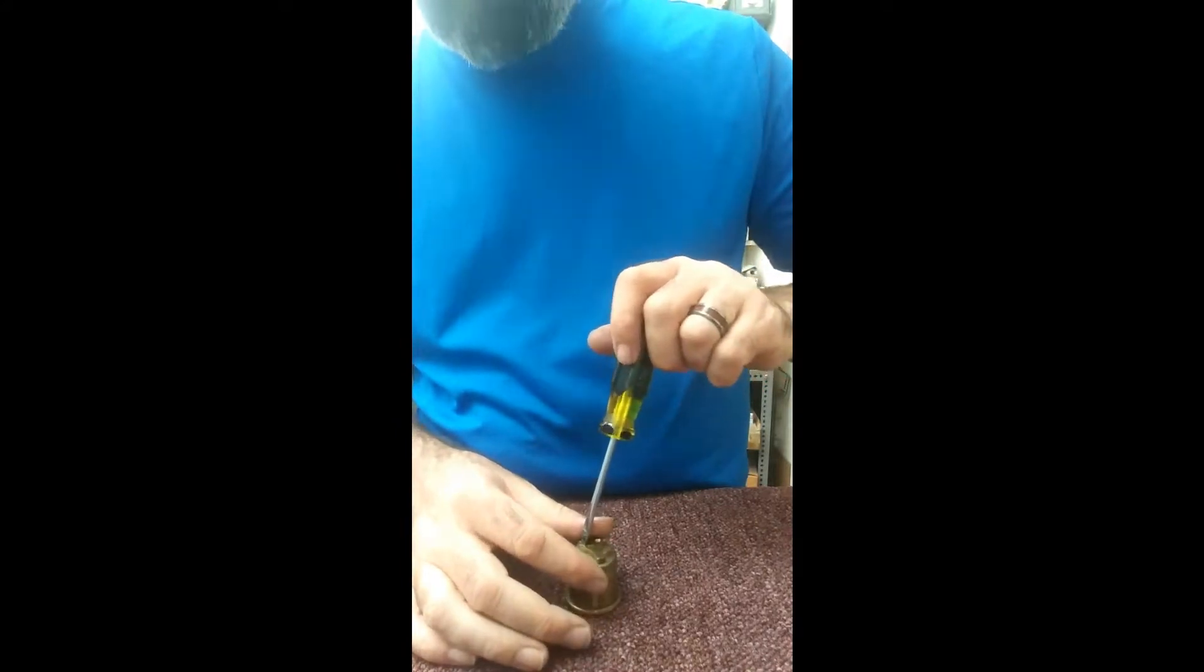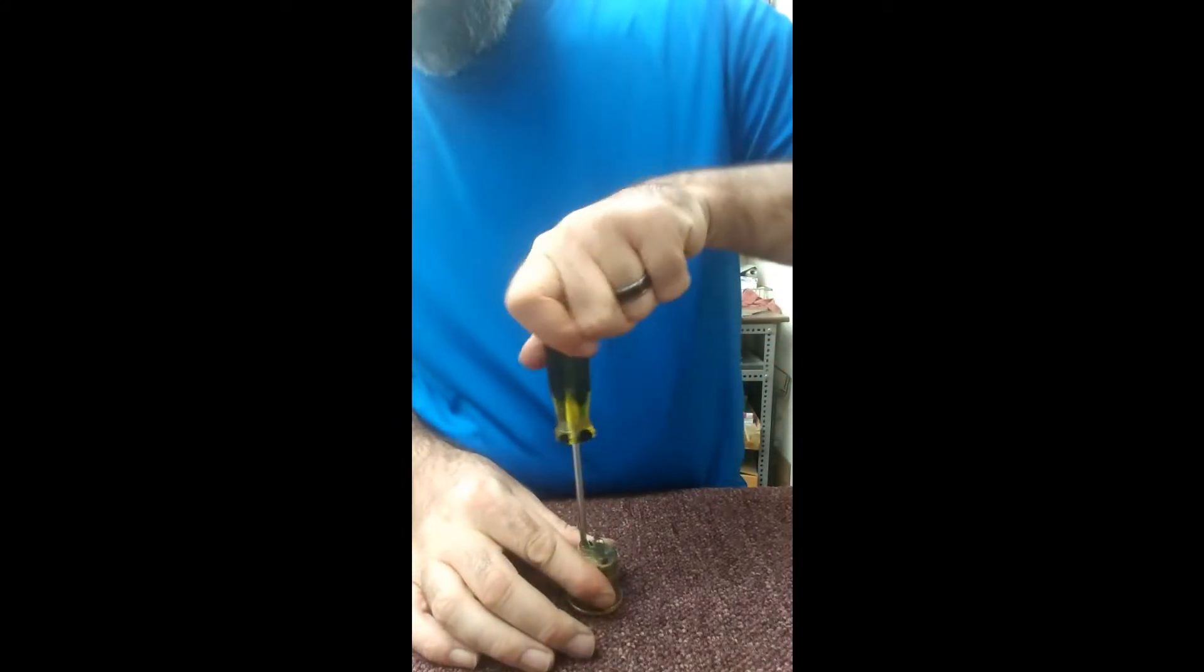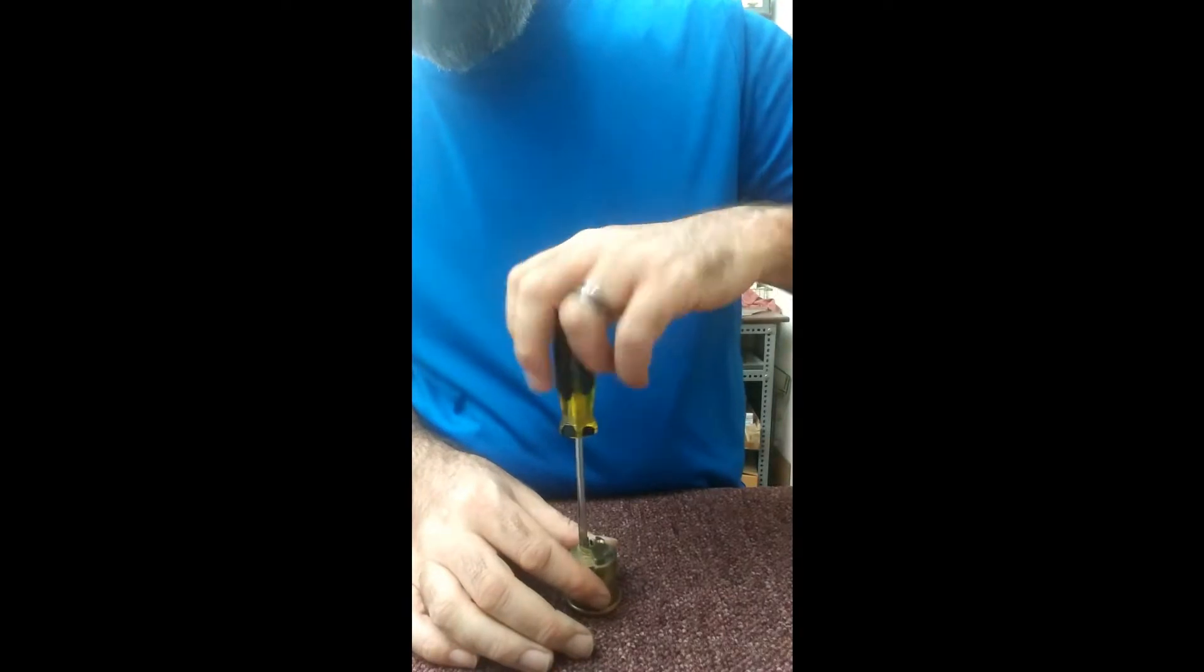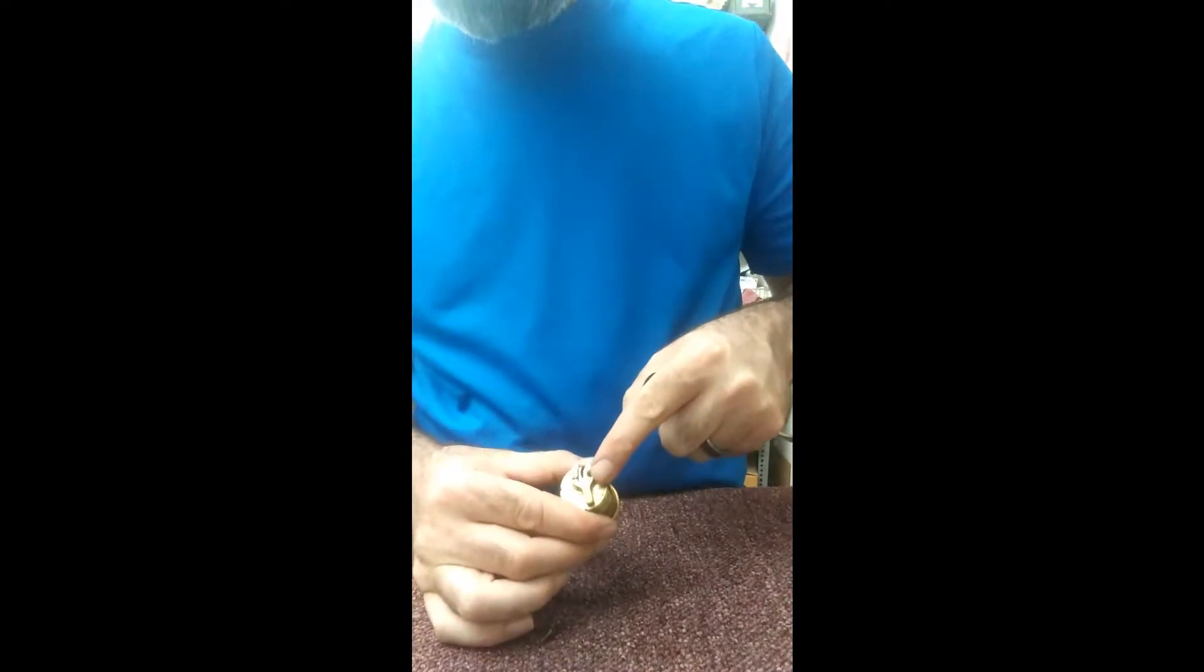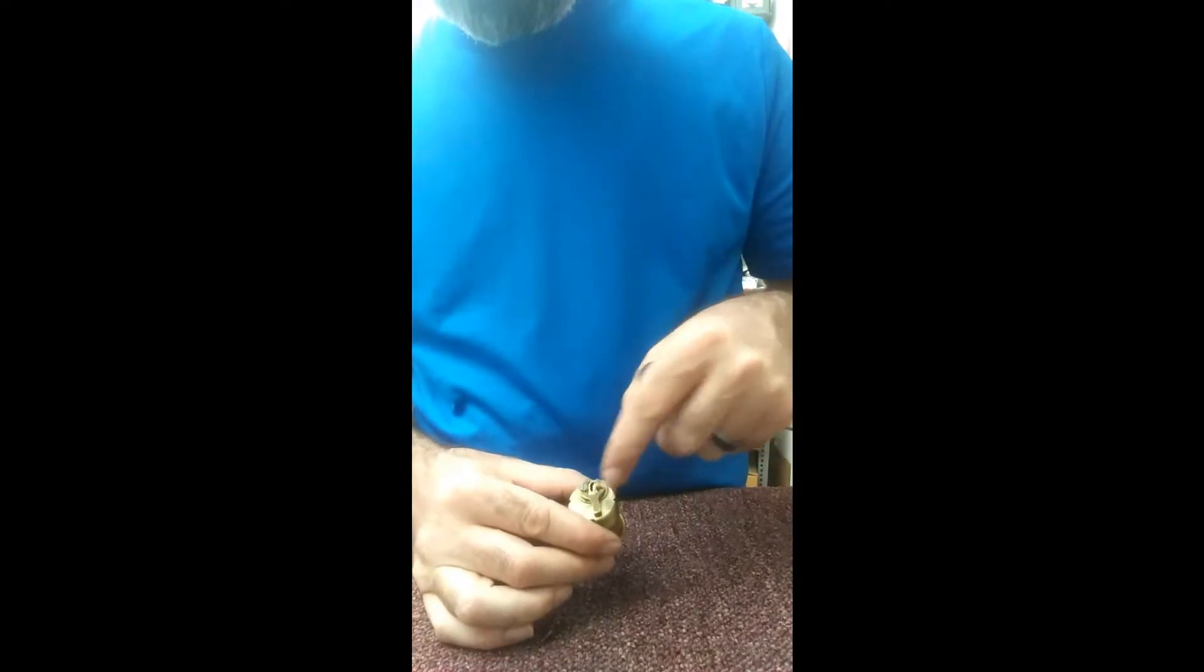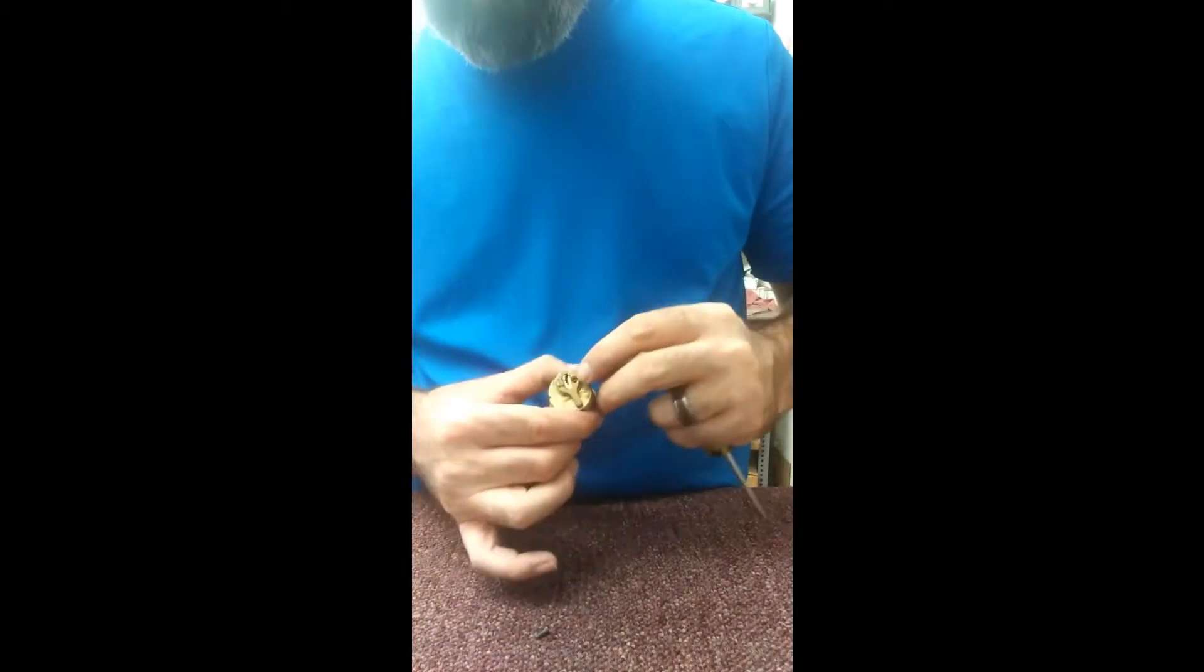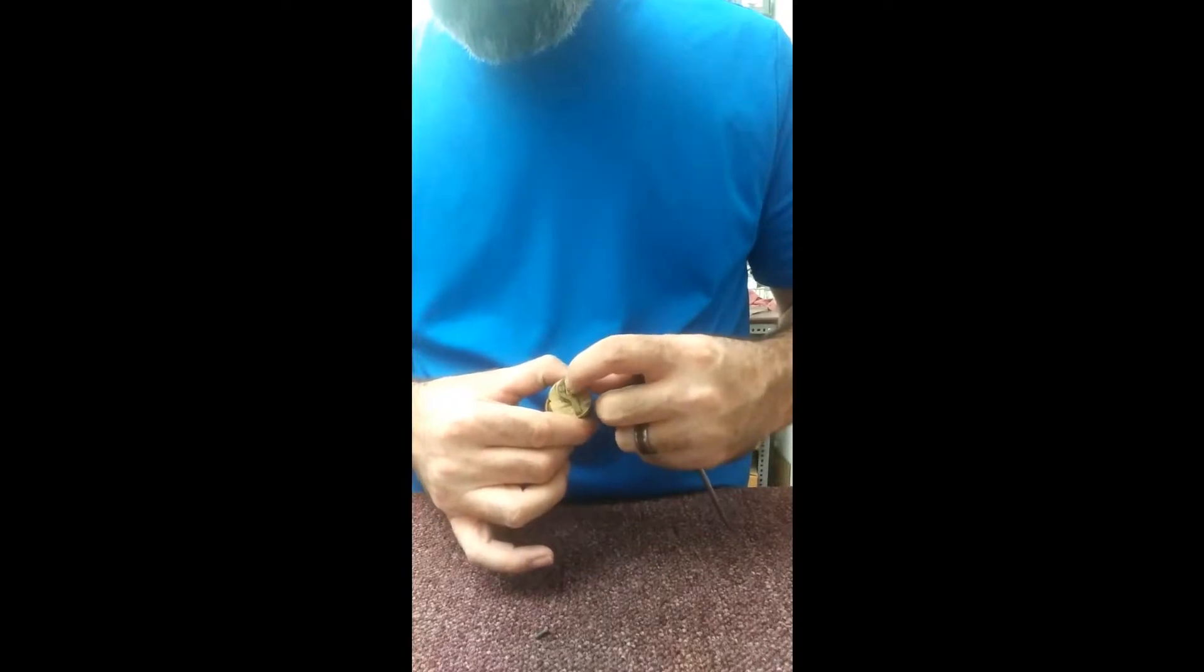One thing that I feel is worth mentioning is that Sargent is pretty unique in their cylinders, meaning that these tailpieces that they have on the back won't work with, say, like a Bilko mortise cylinder. They actually have different dimensions down here in the barrel.